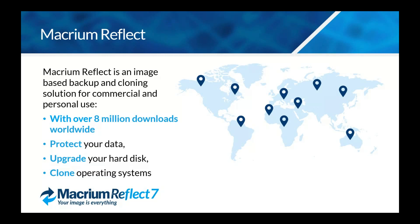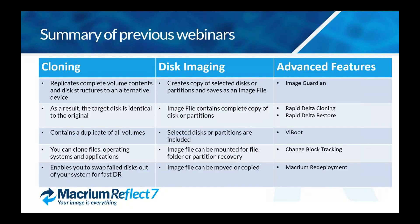Macrium Reflect is an image-based backup and cloning solution used for commercial and home use. We have over 8 million downloads worldwide, allowing you to protect your data, upgrade any hard drive or hardware, and clone your operating systems. We've gone over cloning in previous webinars — how it can replicate complete volume disks and their structures to another device, allowing the target disk to be identical to the original, containing duplicates of all volumes, files, operating systems, applications, and user profiles. You can also swap out failed disks for fast disaster recovery.